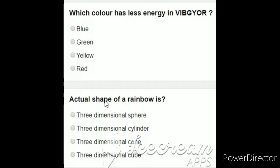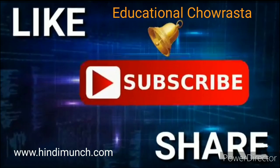Next: actual shape of rainbow is? Here we have options: 3-dimensional sphere, 3-dimensional cylinder, 3-dimensional cone, 3-dimensional cube. The answer is 3-dimensional cone. Subscribe to our channel and click on the bell icon. Thank you.